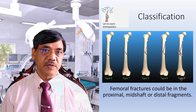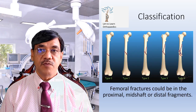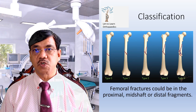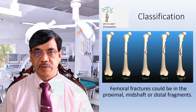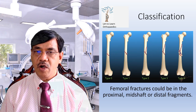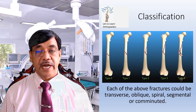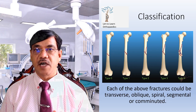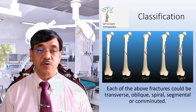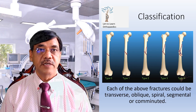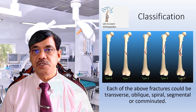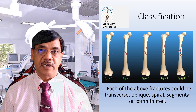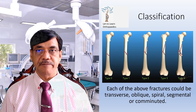Classification: femoral fractures could be in the proximal, mid-shaft, or distal fragment. Each of the above fractures could be transverse, oblique, spiral, segmental, or comminuted.